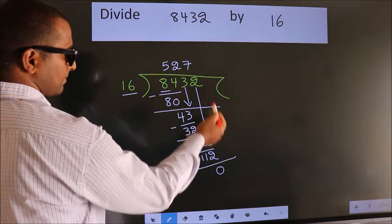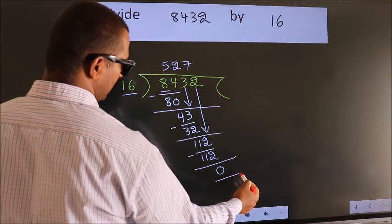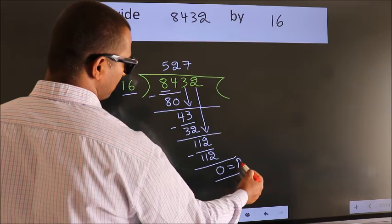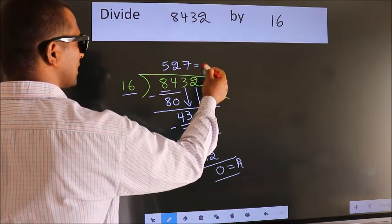No more numbers to bring down, so we stop here. This is our remainder. This is our quotient.